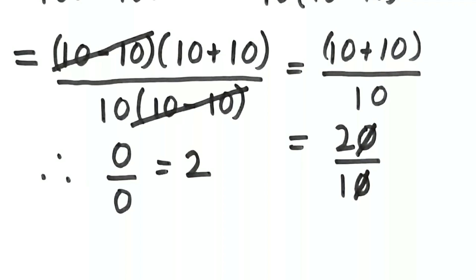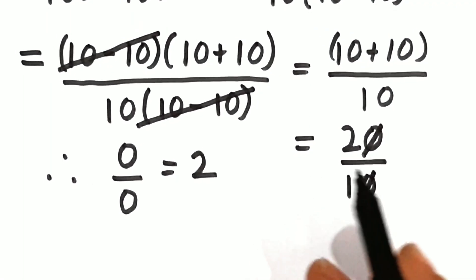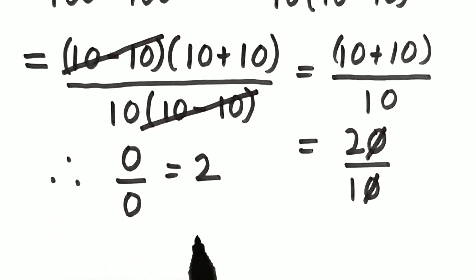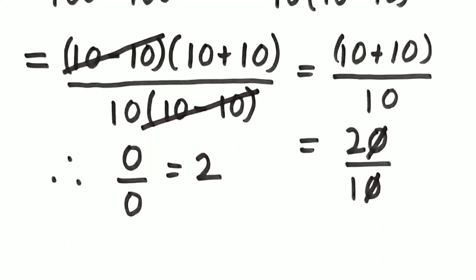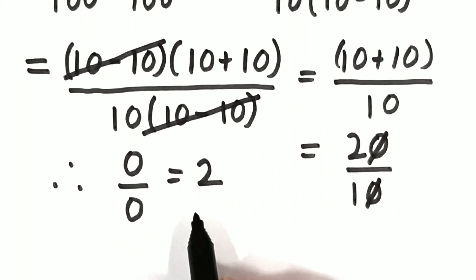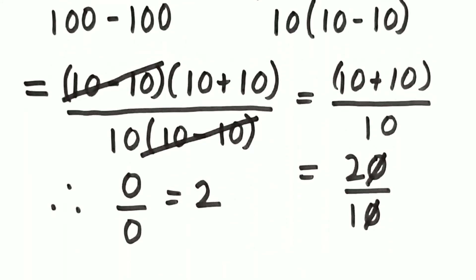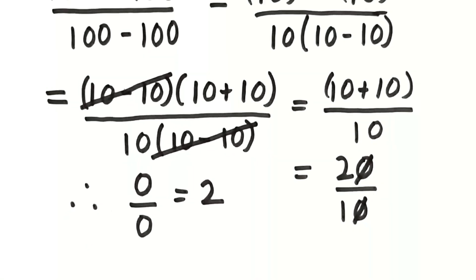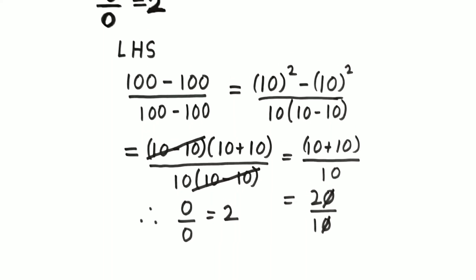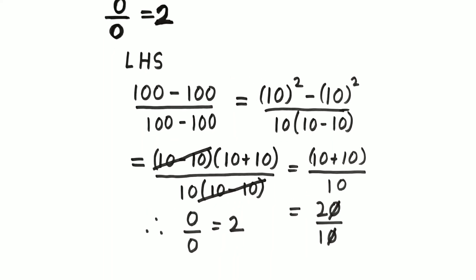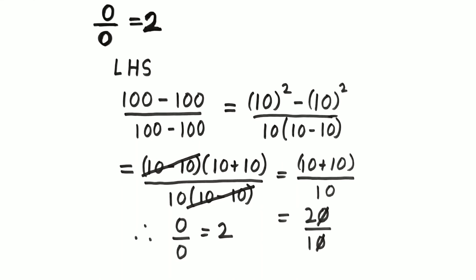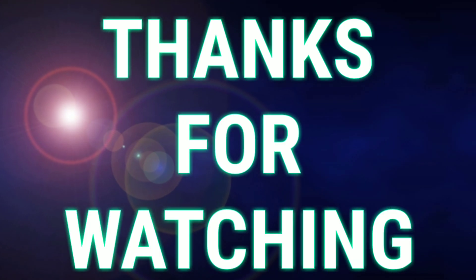This is not mathematically correct. Actually in maths, 0 divided by 0 is an error — it's not defined. But over here I have somehow proved that 0 upon 0 equals 2. If you want to look at it closely and remember this, please pause the video here. I hope you like the video, guys. Thanks for watching.